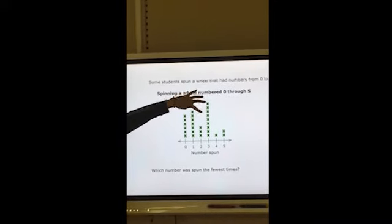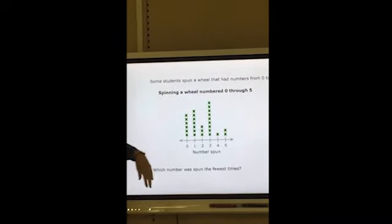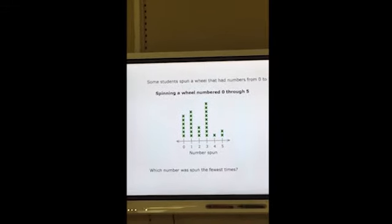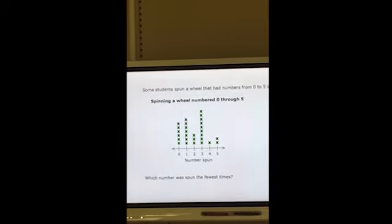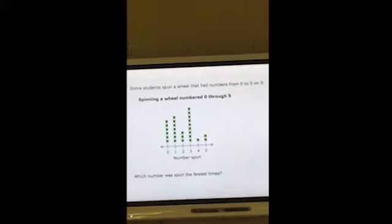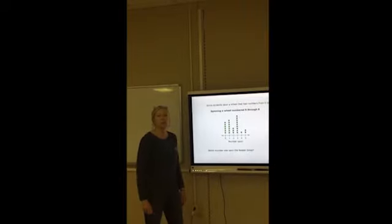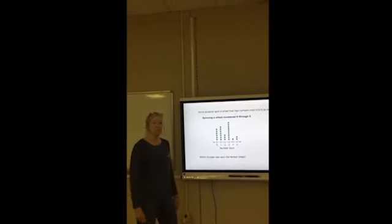And we have 8 or 9 students that spun a 3. We have 1 student that spun a 4, and 2 students that spun a 5. The question again was, which number was spun the fewest times? And so we see that the number 4 was spun the fewest number of times.